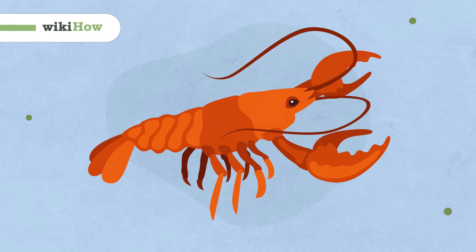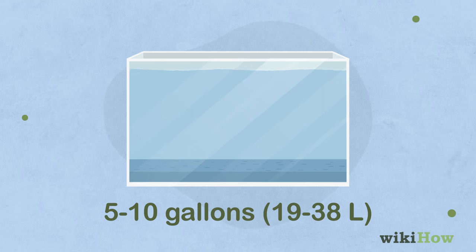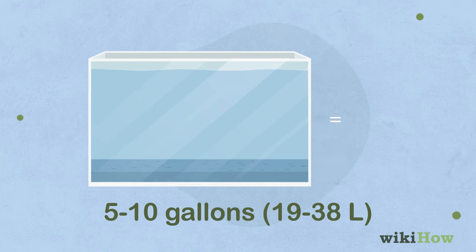To care for crayfish, you'll need a tank that holds at least 5 to 10 gallons, 19 to 38 liters of water for each crayfish.